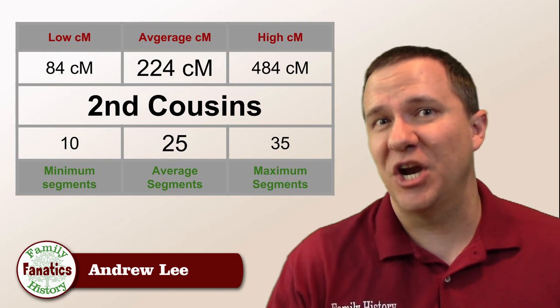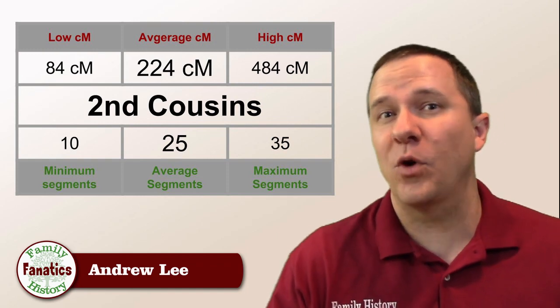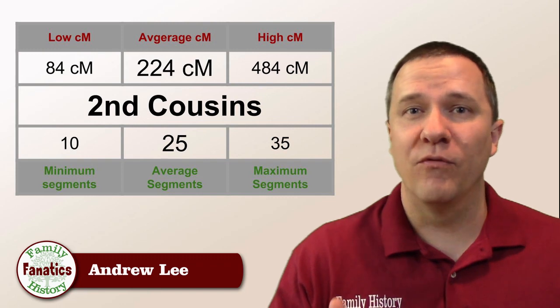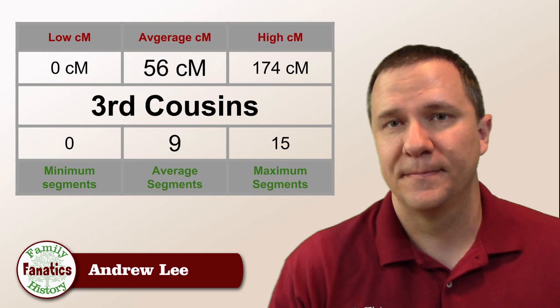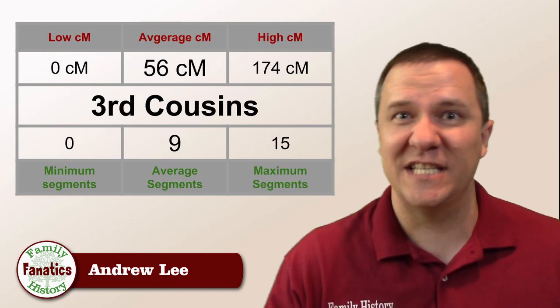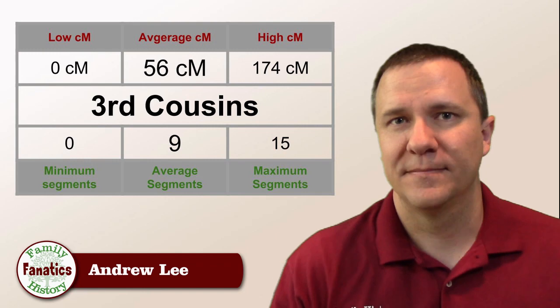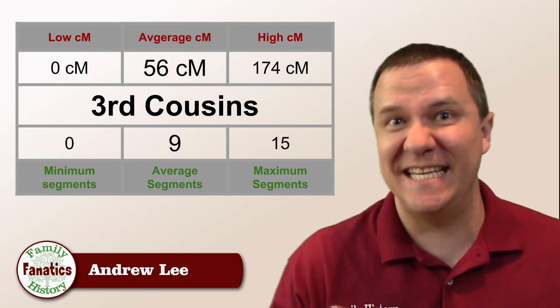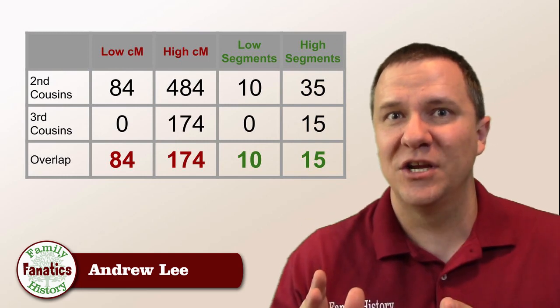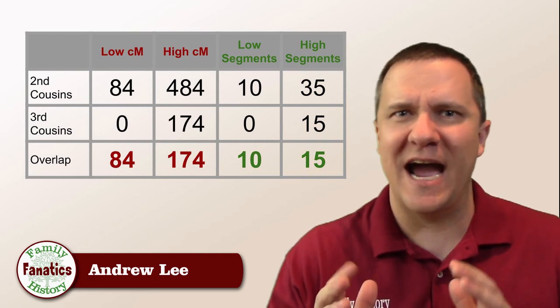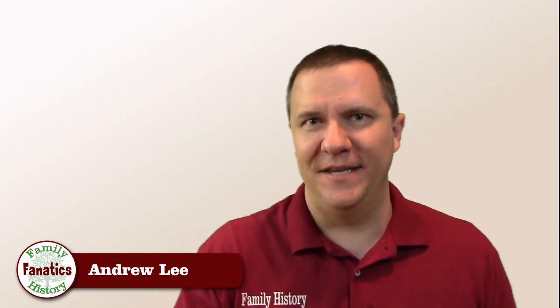For instance, second cousins share between 84 centimorgans and 484 centimorgans, and this could be over a range of 10 segments to as many as 35 segments. Third cousins share between 0 centimorgans and 174 centimorgans, and this could be between 0 segments and 15 segments. So you can see that between second cousins and third cousins, there's a range that overlaps that could be either. When you get into half relationships and the number of generations removed, there tends to be a lot more overlap into all of these different relationships.